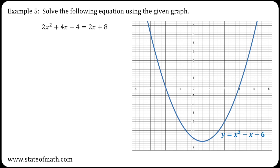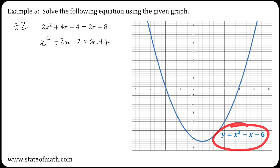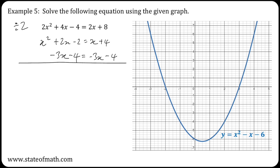Finally, in example 5, the left-hand side starts with 2x squared. So before I start adding or subtracting, I'll need to divide by 2. This gives me x squared plus 2x minus 2 equals 2x plus 4. Now I'll add and subtract what is required to match the left-hand side to the plotted equation. I've got 2x and I should have a minus x, so subtract 3x on both sides. I've got a minus 2 and I should have a minus 6, so subtract 4 again on both sides.